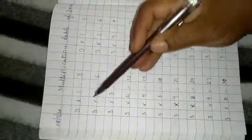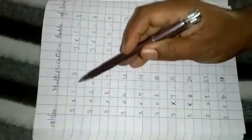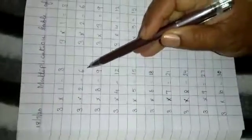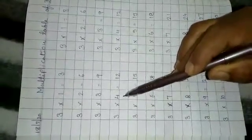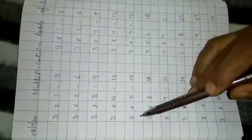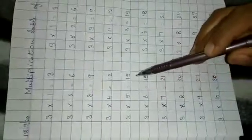3 1s are 3. 3 2s are 6. 3 3s are 9. 3 4s are 12. 3 5s are 15.